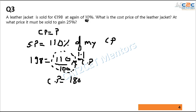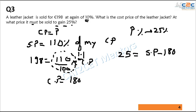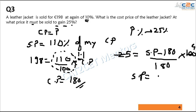Now for the second part: at what price must the jacket be sold to gain 25%? We know CP = 180 and the required profit is 25%. Applying the formula: 25 = (SP − 180) / 180 × 100. Solving this gives SP = 225 rupees.